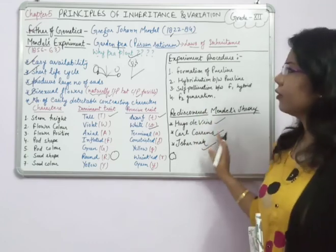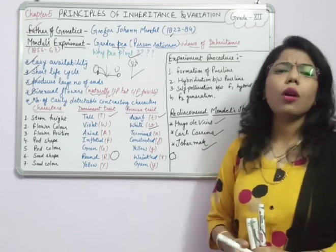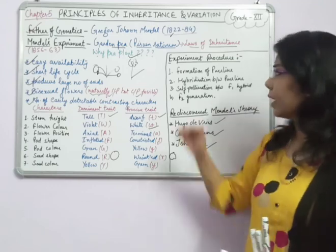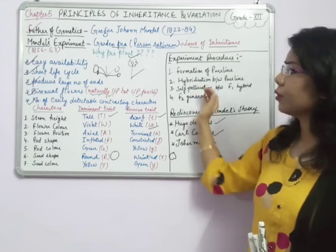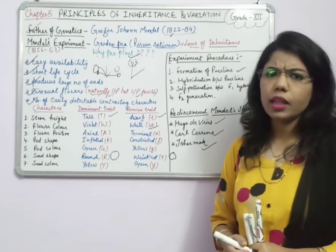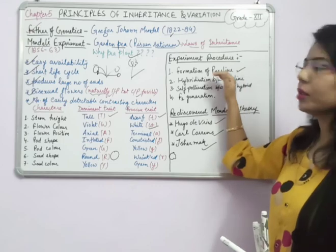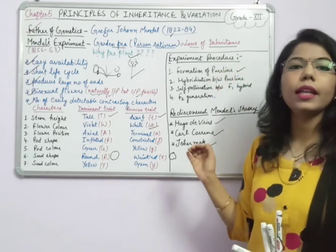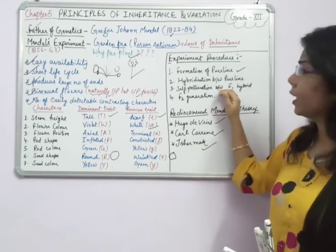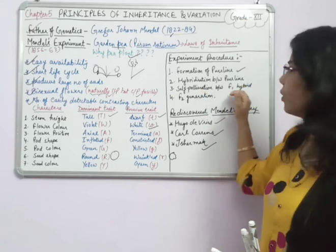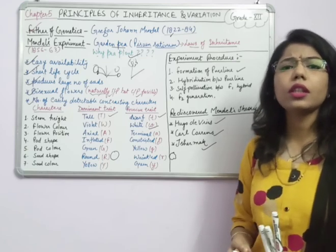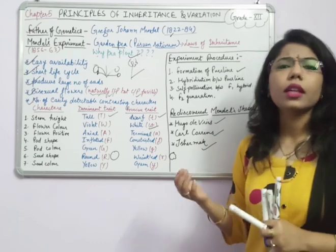Now we will discuss how Mendel conducted his experiment. The steps were: first, formation of pure lines; then hybridization between the pure lines; then obtaining the F1 generation and performing self-pollination of the F1 hybrid; and finally studying the F2 generation, where different phenotypic and genotypic ratios were obtained. Mendel was also very lucky that the seven characters he chose were not linked — they were on different chromosomes or very far apart, so linkage did not interfere with his results.